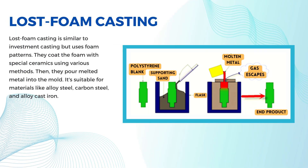Lost foam casting is a bit like investment casting, but it uses foam instead of wax to make the pattern. They cover the foam with a special ceramic material by dipping, coating, spraying, or brushing. After that, they pour melted metal into the mold to make the desired part. This method works for different materials like alloy steel, carbon steel, alloy cast iron, and more.